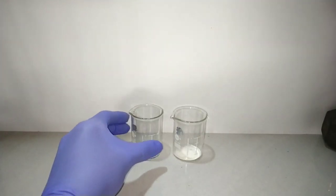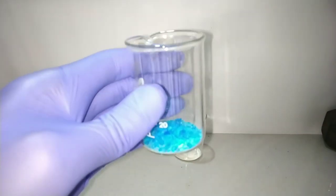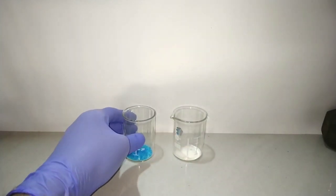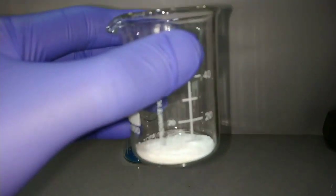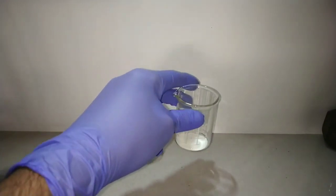I have 2.4 grams of copper 2 sulfate pentahydrate pre-weighed and placed in this 50 milliliter beaker. In the other beaker I have 2 grams of sodium metabisulfite.